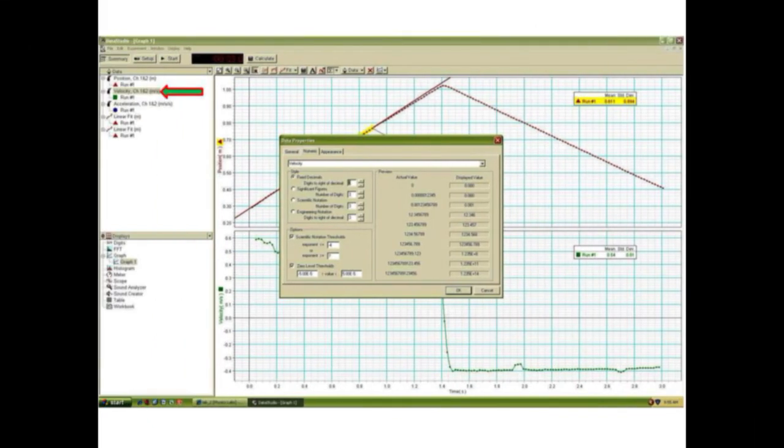Another software tool you may wish to internalize early in the lab semester is how to increase the accuracy of the displayed digits. Simply double-click on the velocity data at the upper left of the window and change the numerical display to show more digits beyond the decimal.